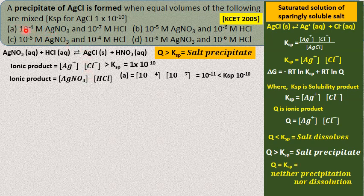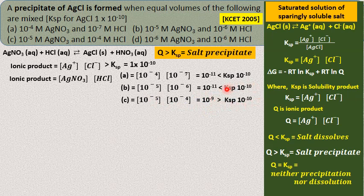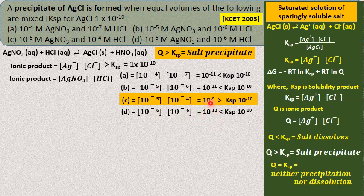First case: [AgNO3] = 10⁻⁴ and [HCl] = 10⁻⁷. Product is 10⁻⁴ × 10⁻⁷ = 10⁻¹¹, which is less than 10⁻¹⁰ (Ksp). Q < Ksp, so dissolution occurs — not precipitation. Second case: concentrations give 10⁻⁵ × 10⁻⁶ = 10⁻¹¹ — also less than Ksp, so dissolution again. Third case: 10⁻⁵ × 10⁻⁴ = 10⁻⁹, which is greater than 10⁻¹⁰ — Q > Ksp, so precipitation does take place. Fourth case: product is 10⁻¹², which is less than Ksp, so dissolution occurs.